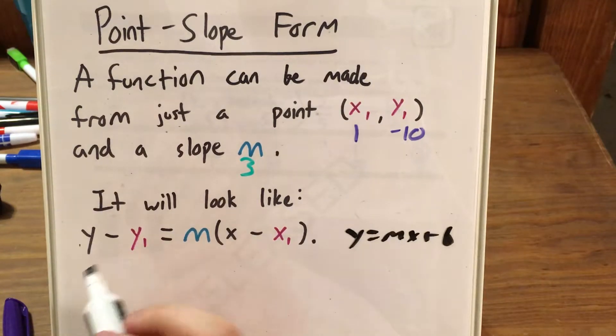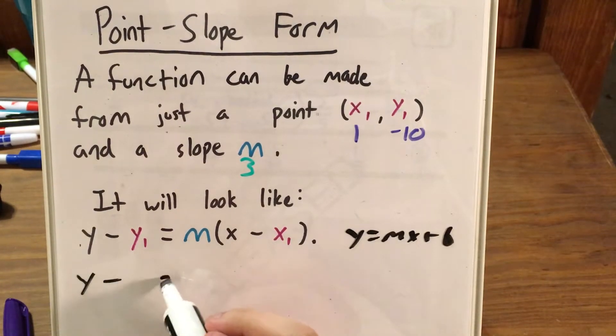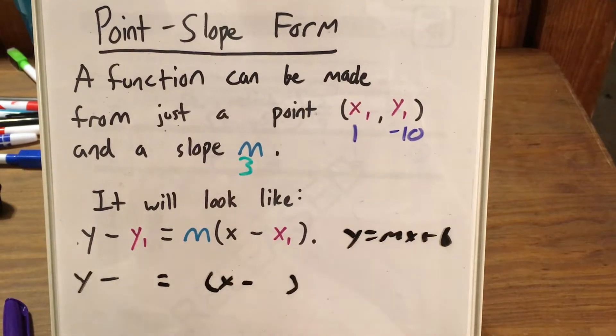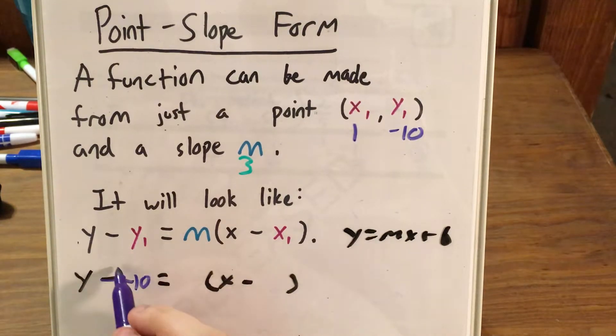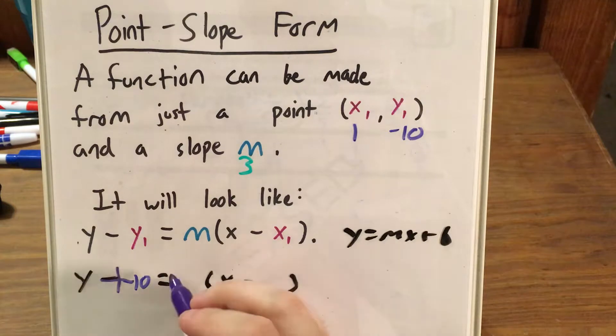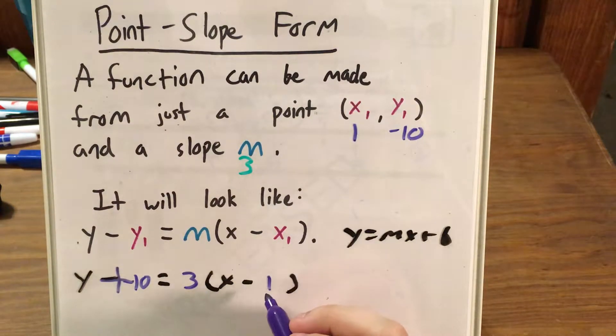Alright, so to actually go ahead and fill this information in, I will make the shell of this formula. So this is y minus our y-coordinate, which is y minus negative 10, also known as y plus 10, equals 3 times x minus 1. So now that I have my point-slope form of this line, I need to go ahead and play around with it. First, distribute. I'm going to distribute 3 to x and make it 3x. I distribute 3 to 1, and it becomes 3. I keep my subtraction sign in the middle, and this becomes 3x minus 3. And now I left y plus 10 alone.